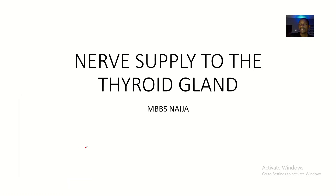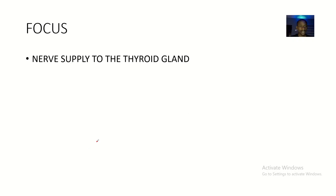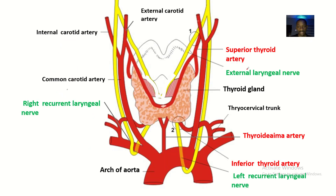We spoke about the blood supply to the thyroid gland and the blood drainage. Next, what is so important is to talk about the nerve supply, and following the nerve supply, the lymphatic drainage of the thyroid gland. So what is the nerve supply to the thyroid gland? The focus is to discuss the nerve supply to the thyroid gland.